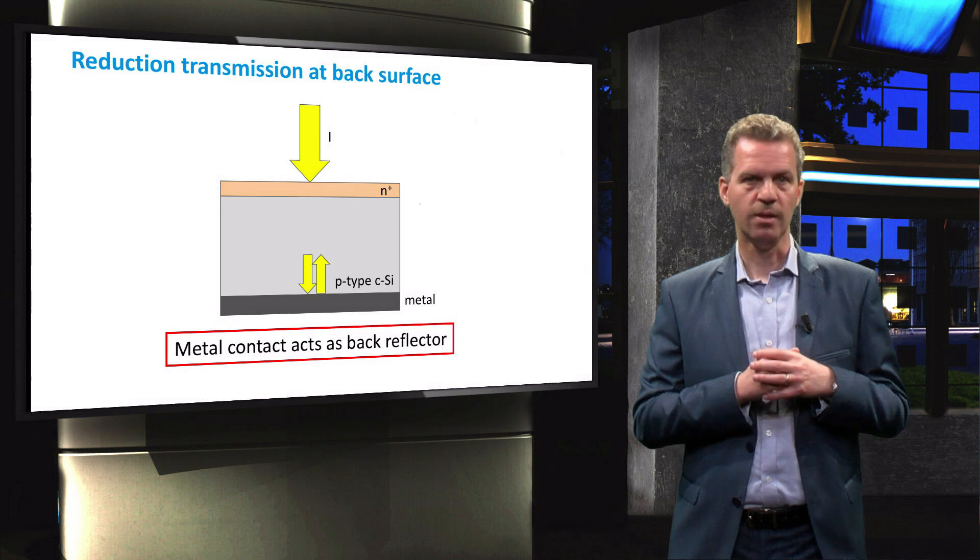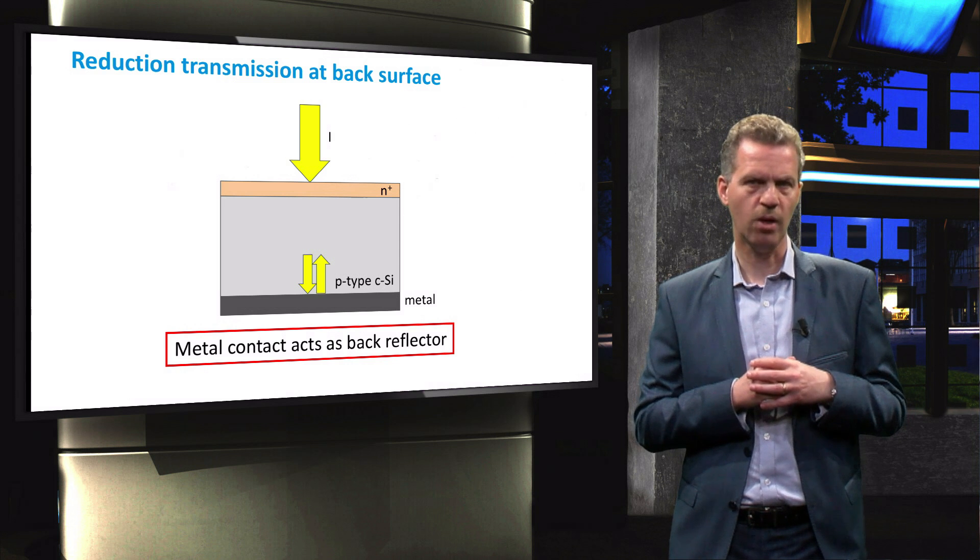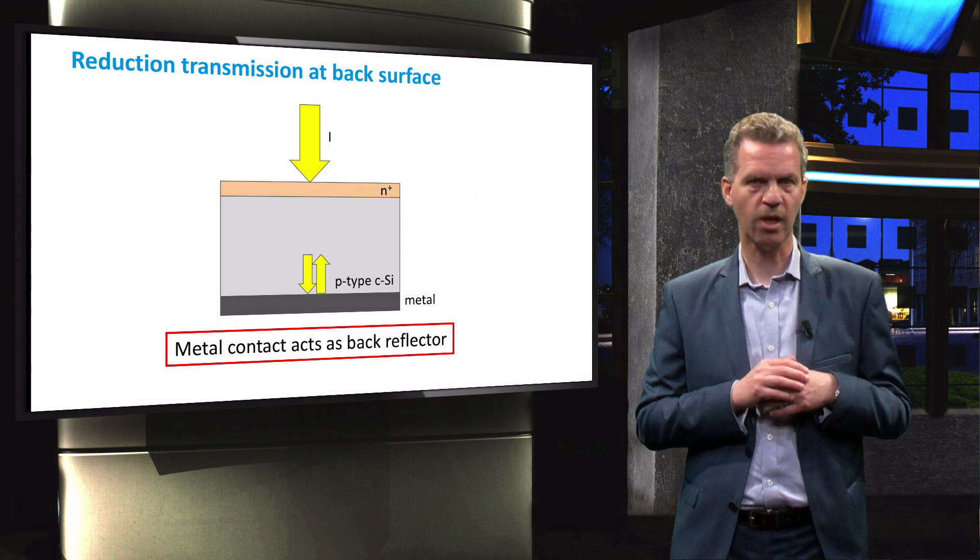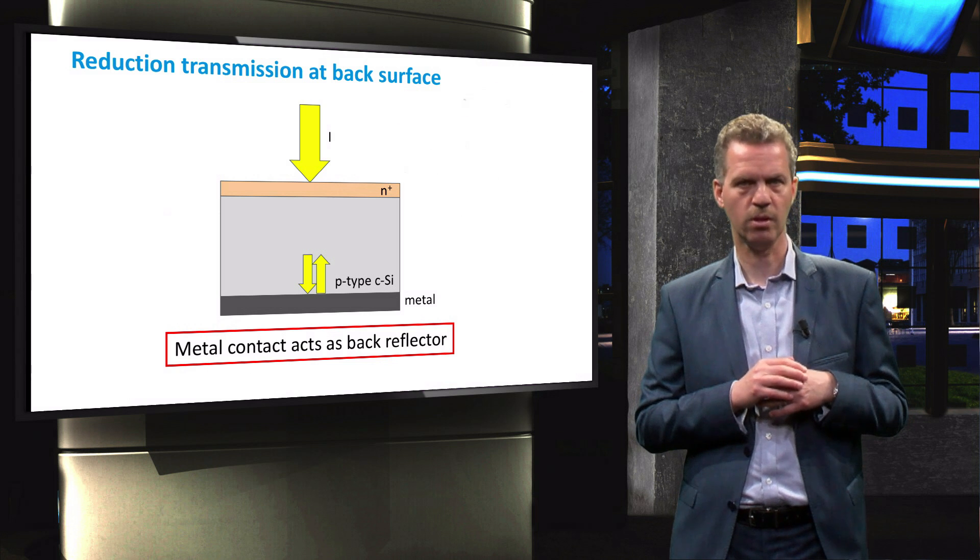The reflection at the metal back contact is roughly 90% for aluminium, such that it is equivalent to almost doubling the path length of light reaching the back of the solar cell.